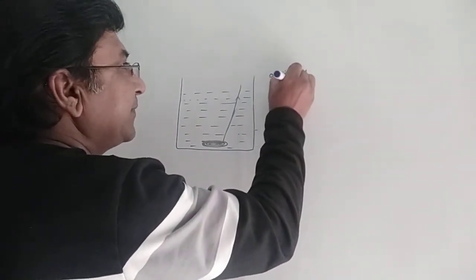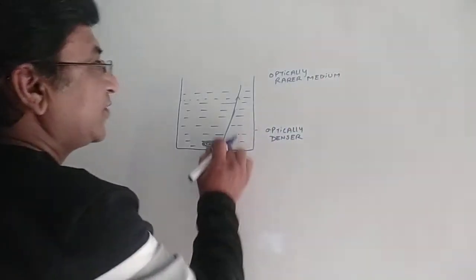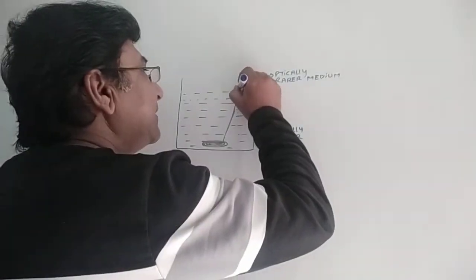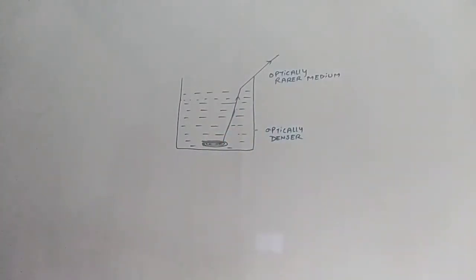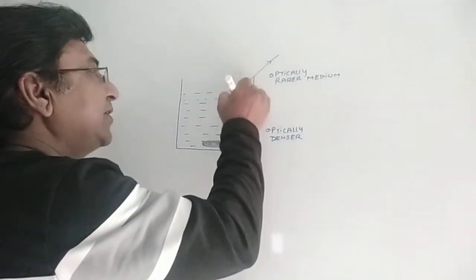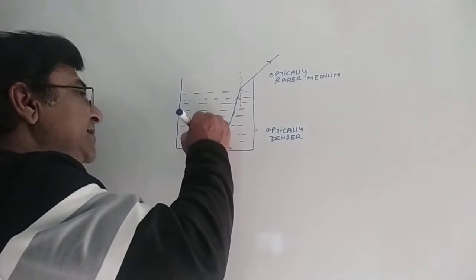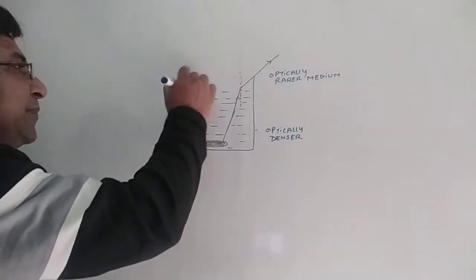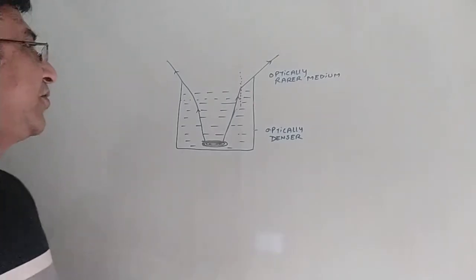When a ray of light passes from a denser to a rarer medium, it bends away from the normal — we have already discussed this. So when the ray passes from optically denser water to rarer air, it bends away from the normal. We can see this with two rays both moving away from the normal.